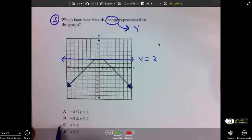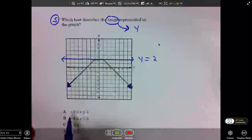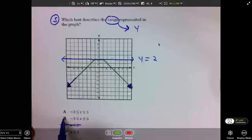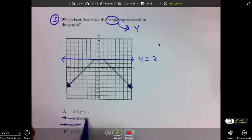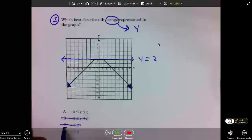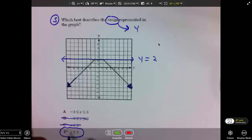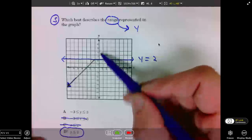So, it certainly wasn't going to be C. C refers to the X. We're looking for the range. Range is Y. Likewise, it wouldn't be B, also referring to the X. The correct answer is D. Y's less than or equal to 2. We have no Y value above 2. They're all 2 and below.